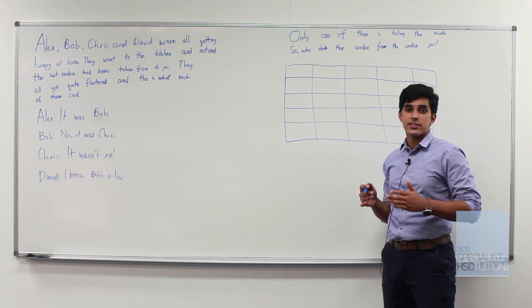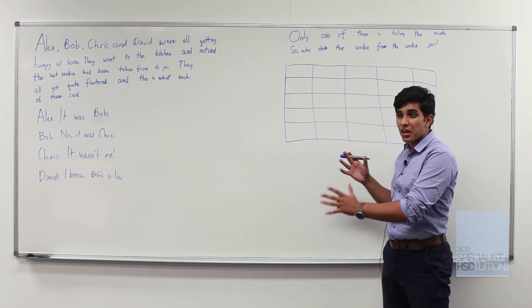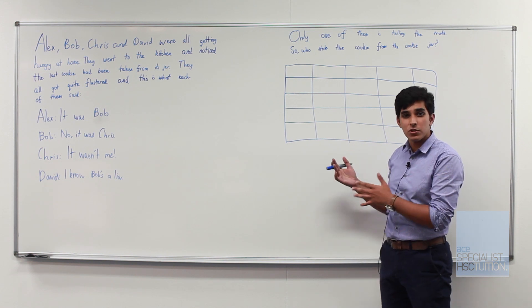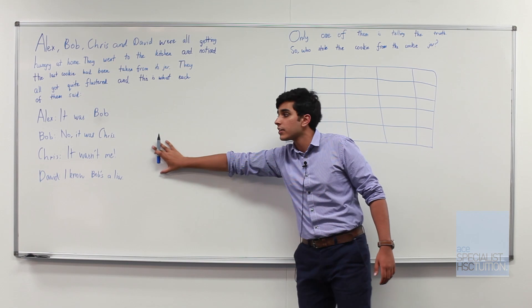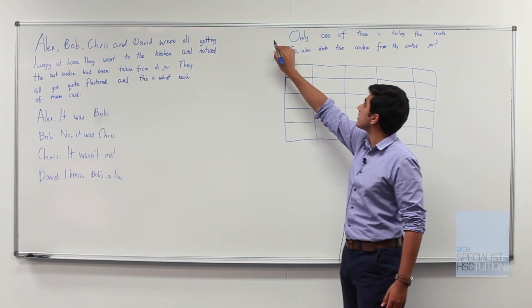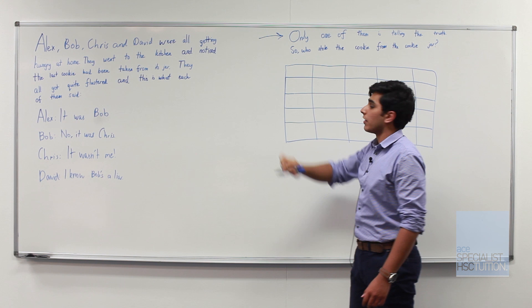So there are two main things that we need to identify. What is our statements or information and then what's our rule. We have all our information but our rule or the important thing here is that only one of them is telling the truth.